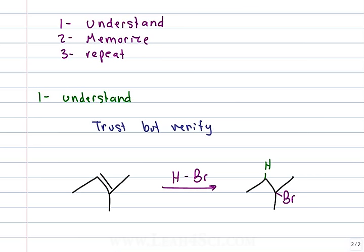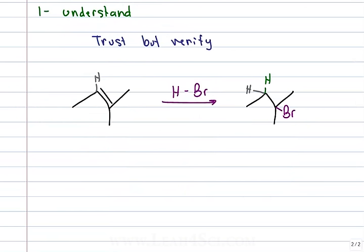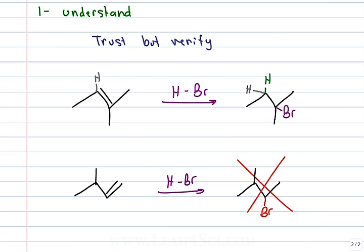This is what you memorized. But if I give you the same question with the pi bond repositioned, you're not going to give me an answer that is straight-up memorization. You won't just put the bromine there because that is incorrect. If you thought carbocation, you're absolutely correct. If you thought most stable intermediate, you're absolutely correct. Markovnikov's rule tells us the intermediate that forms will be the most stable possible intermediate.